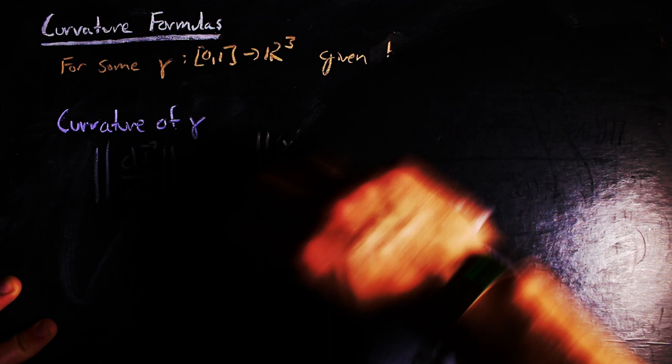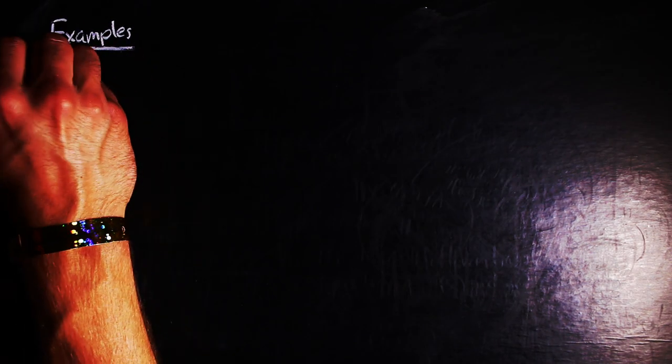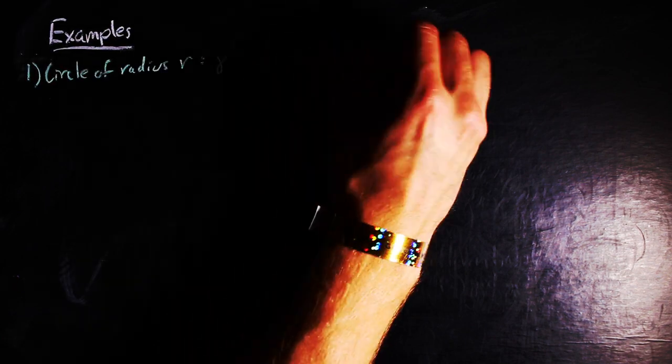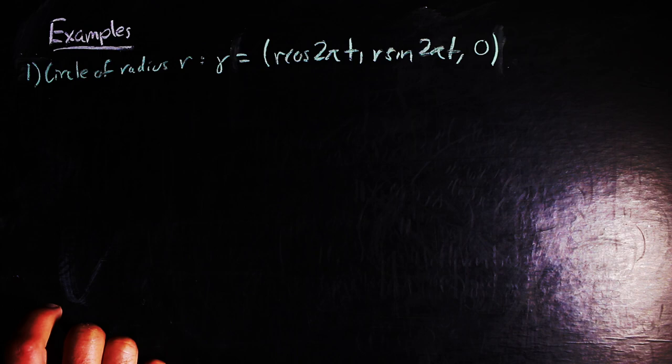Okay, so we have some formulas. Let's go through a few examples. A circle of radius r in a plane in three space can be parameterized by r cosine 2 pi t, r sine 2 pi t, and zero, for t in the interval from zero to one.